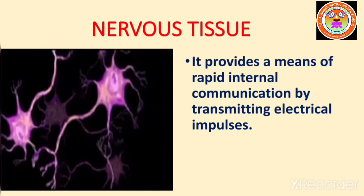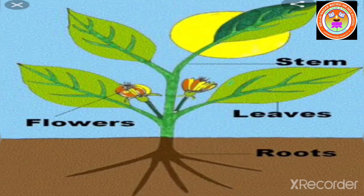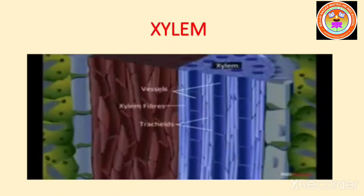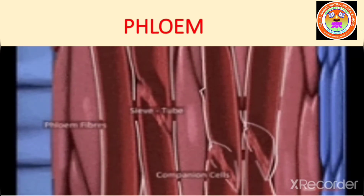An organ is a structure made up of a collection of tissues that carry out a specialized function. For example, in plants, the root, stem, and leaves are organs, whereas xylem and phloem are tissues.